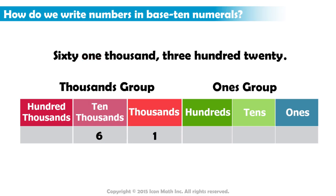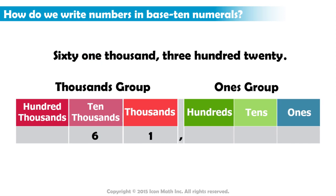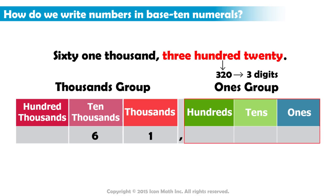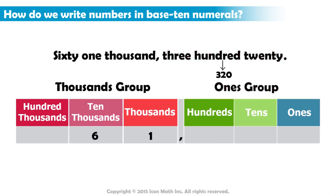Once we finish writing the digits of a group, we write a comma immediately to the right of the last digit in the group. The next part of the number follows the comma — it is 320. This is a three-digit number, and it goes into the second group called the ones group, which comes before the thousands group in terms of value. We insert the three into the hundreds place, the two into the tens place, and the zero into the ones place. And that is how we write 61,320 in base ten numerals.